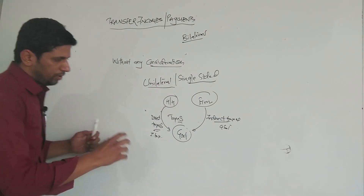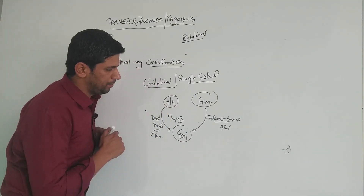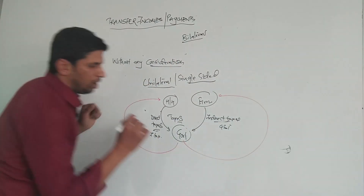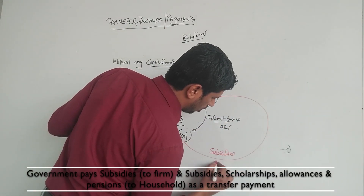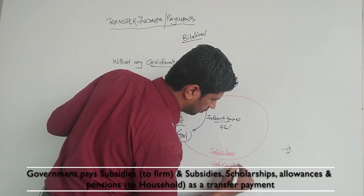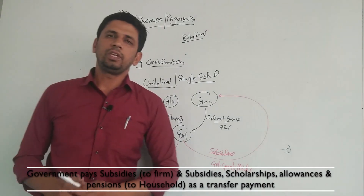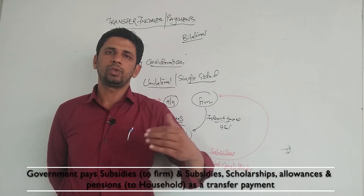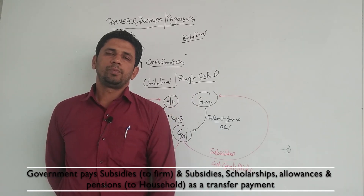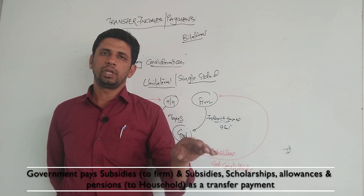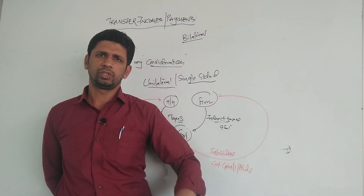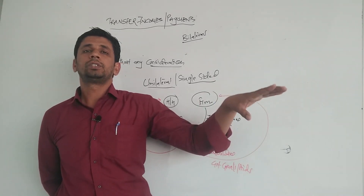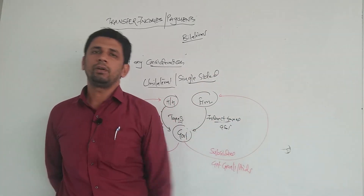On the other hand, the government also pays some transfer payments to the firm sector, in the form of subsidies, government grants, or aids. Subsidies are provided to the firm sector so they can carry out business operations smoothly without restrictions or obstacles. Sometimes we call these bail-out packages from the government — subsidies provided just to help the firm sector.